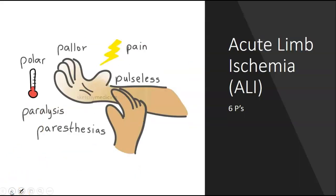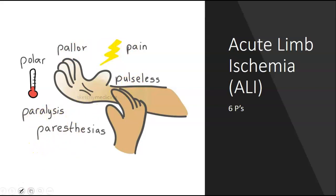Know your six Ps: polar (cold), pallor, pain, pulseless, paralysis, and paresthesia.